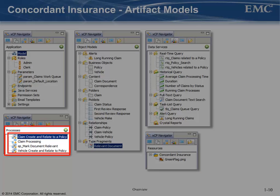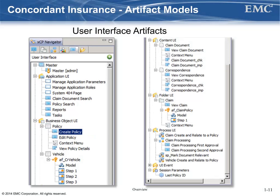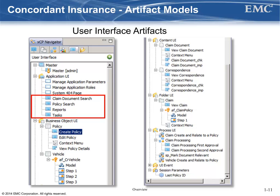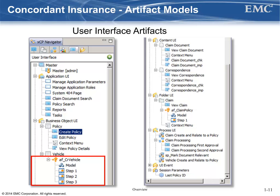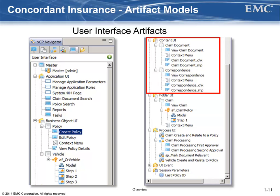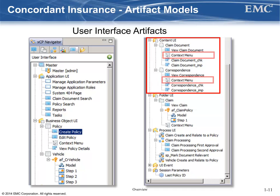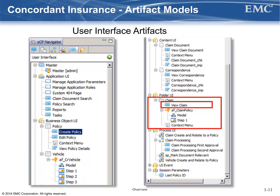Three stateless processes will be created along with a stateful process. We will be creating several user interface artifacts: the master page and several application pages for policy and claim document searches, along with the tasks and reports pages. Each business object will have its collection of user interface artifacts like create, view, and edit pages, along with a context menu. Some, like the vehicle business object, have an action flow. Content objects have content UI artifacts — each content type will have a view page along with an EMC Documentum content management page fragment for check-in and import functions, along with its own context menu. The user interface for the claim folder has a view claim page, a context menu, and an action flow.